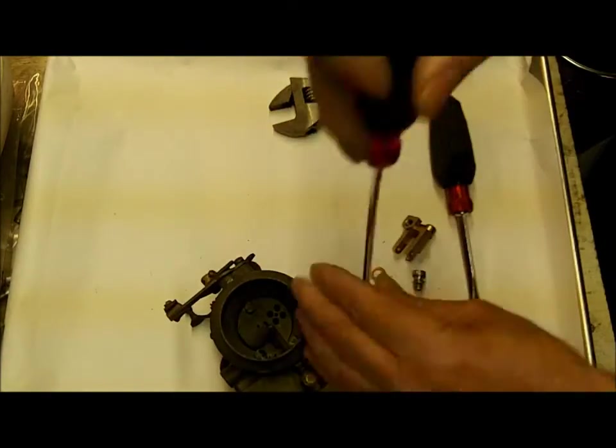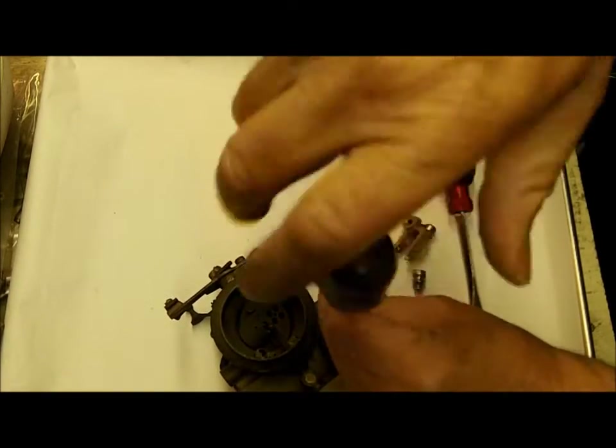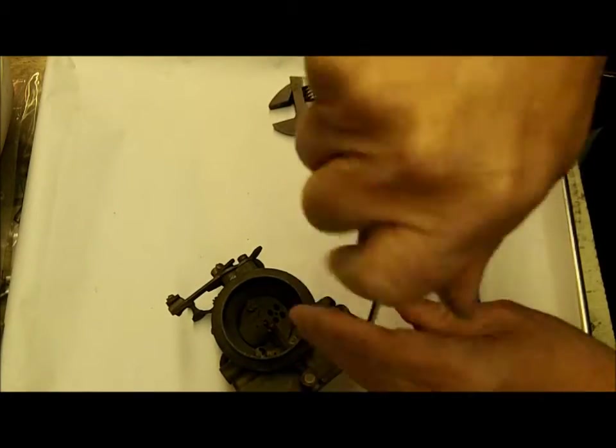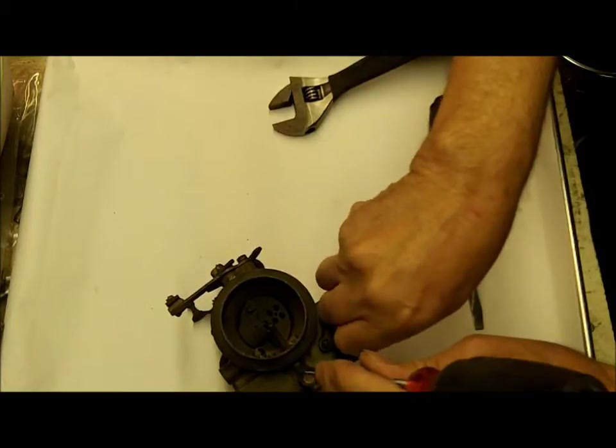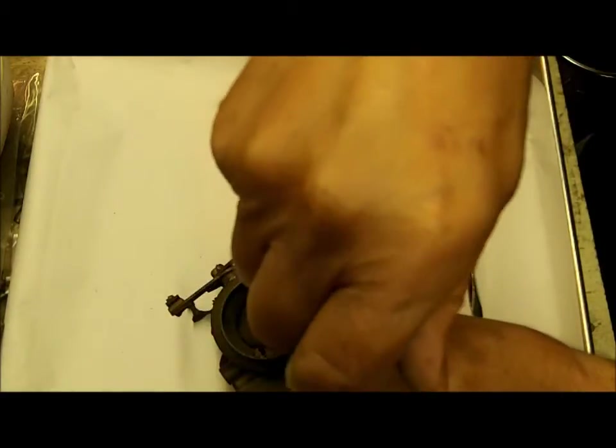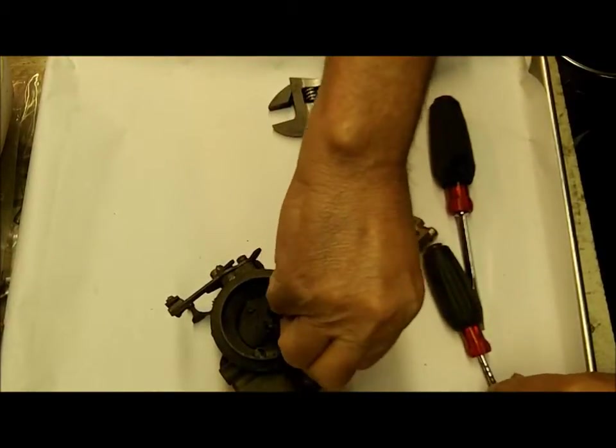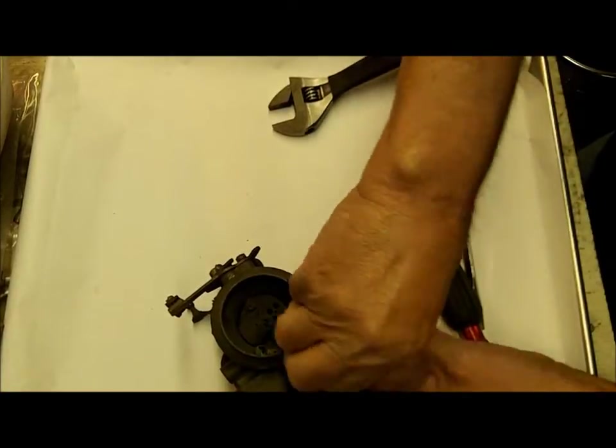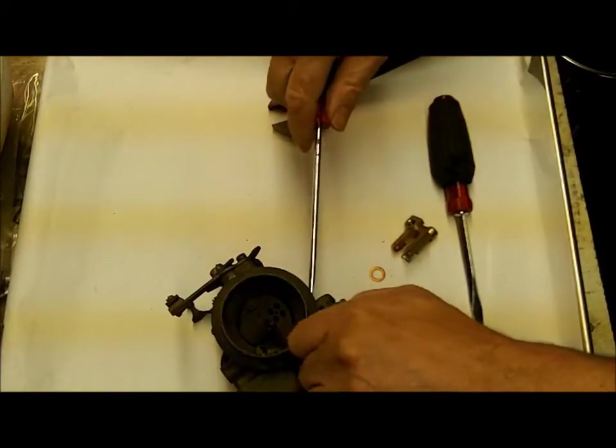Alright, take the economizer out. Seems to be a nice clean little carburetor. Now your 1904 may not be exactly like this one. I haven't looked up to see what this is yet. It will be very similar.